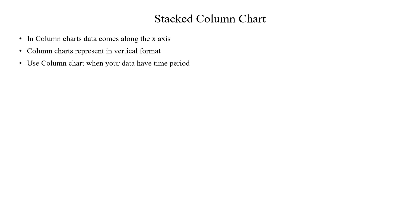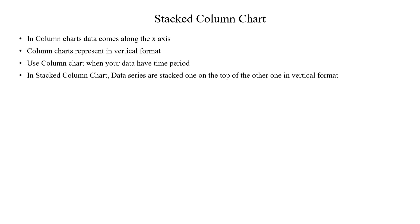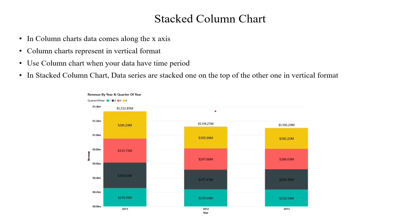If you want to use the column chart, you need a time period in your data set — for example, if you want to use sales for a particular duration. If you want to use the stacked column, you can plot multiple categories in a single column. For example, in a single year we have 12 months, so you can plot the sales in the chart.